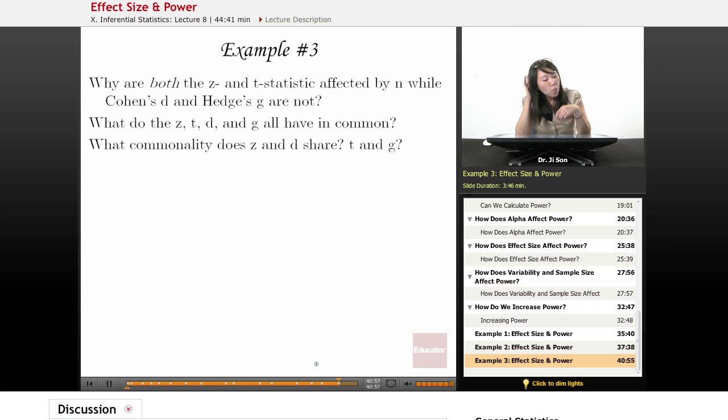All right, example three. Why are both the Z and T statistic affected by N while Cohen's D and Hedge's G are not?